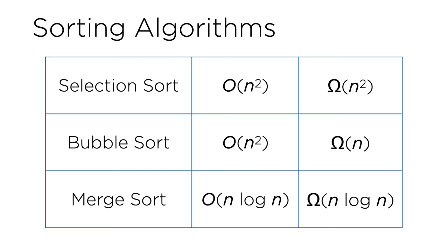Each of these algorithms can be analyzed in terms of their running time — in terms of big O, the upper bound on the number of steps required to complete the sort, as well as big omega, the lower bound on the number of steps required to complete the sort. In this case, we can see that selection sort has both a big O and a big omega of n squared. That is to say, if there are n numbers we are trying to sort, it might take about n squared steps to actually complete that sorting algorithm.